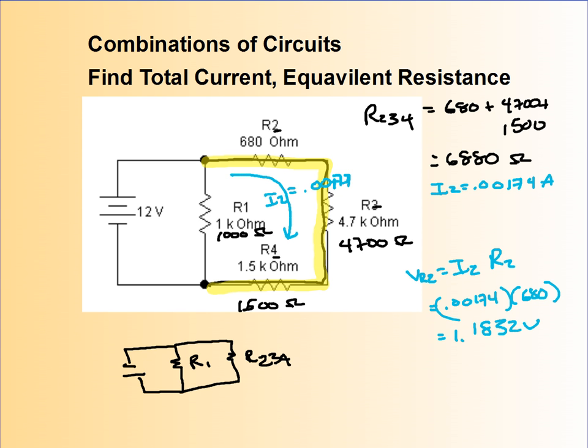Now I'm going to change ink color for these. Voltage across three is current two, because that's the current going through it, times R3. So it's 0.00174 times 4700, and I get a voltage of 8.176 volts.